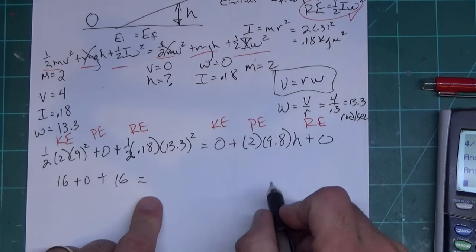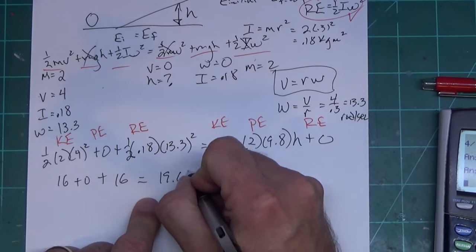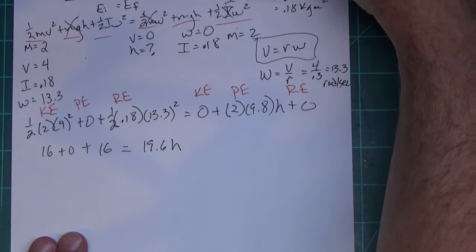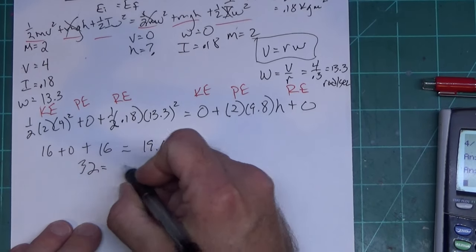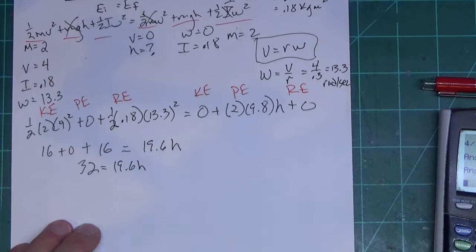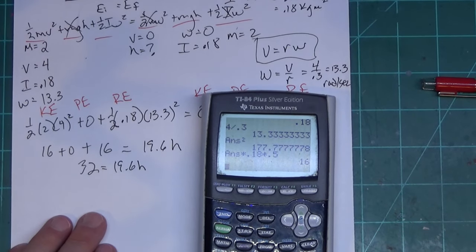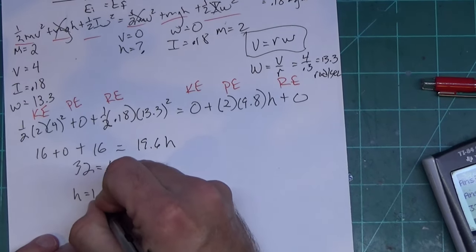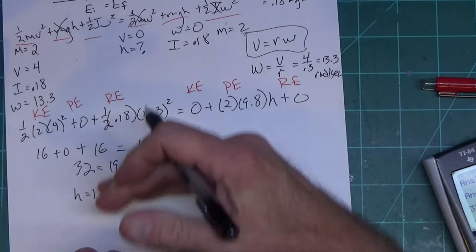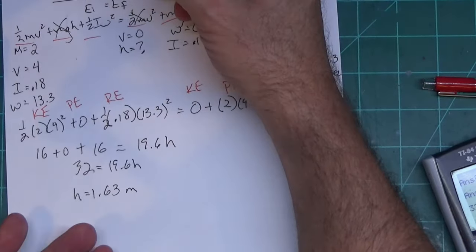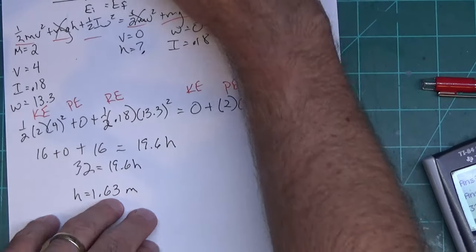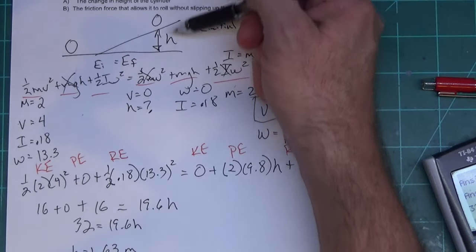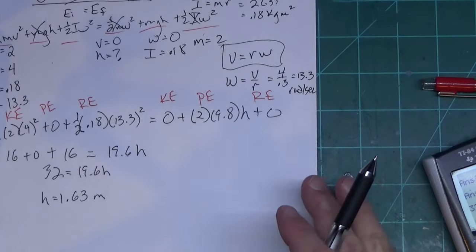The right side gives 19.6h, so we have 32 = 19.6h. Dividing: h = 32 ÷ 19.6 = 1.63 m. That's the vertical change in height — not horizontal distance. Since no angle was provided for part a, we can't find the distance along the slope.